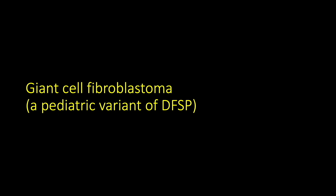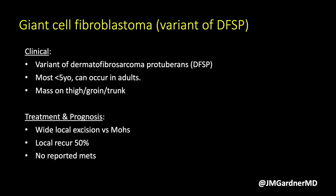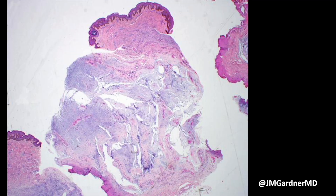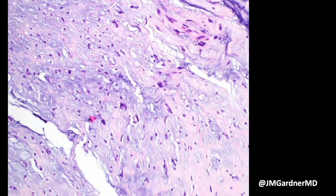Giant cell fibroblastoma is a pediatric variant of DFSP — usually in kids but adults can have it too — and is often mixed with conventional DFSP. It is treated the same way as DFSP; it is basically a morphologic variant. To my knowledge there have been no reported metastases in pure giant cell fibroblastoma, though it is quite rare. Here is what it looks like: it is very myxoid and hypocellular with large cystic pseudovascular spaces.